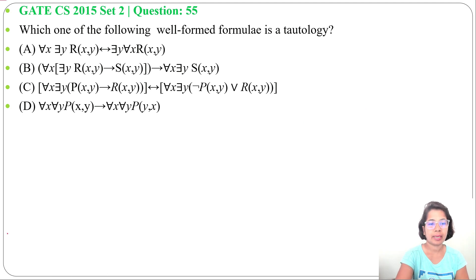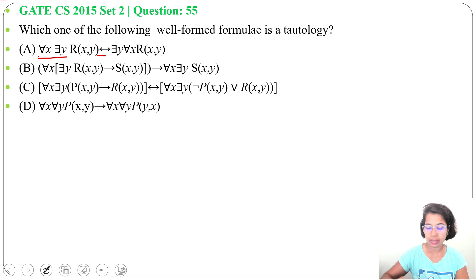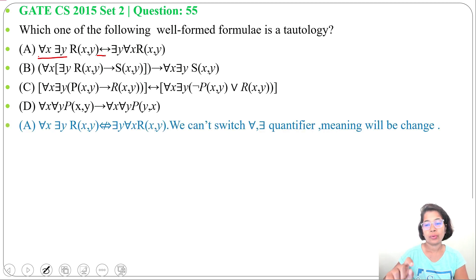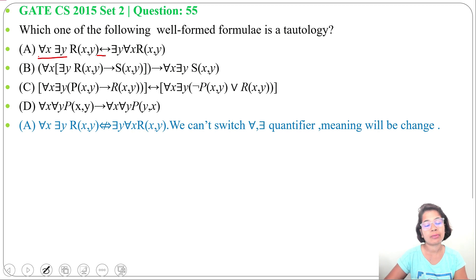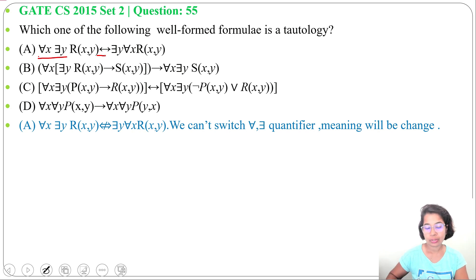Option A: 'for all x, there exists y, r(x,y)' with double implication 'there exists y, for all x, r(x,y)'. This is not true. We cannot switch universal and existential quantifiers; the meaning will be changed. Both are not equivalent, so this is not a tautology.